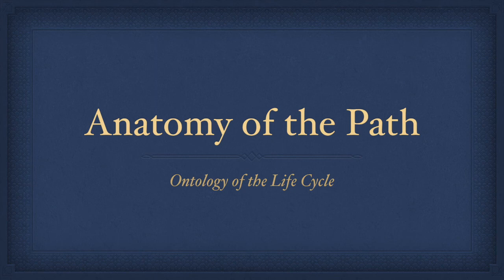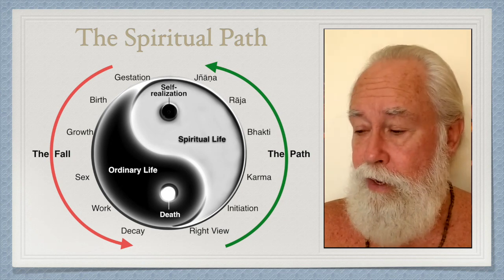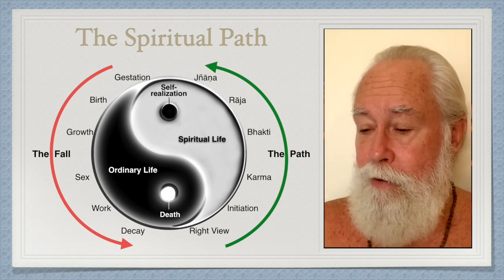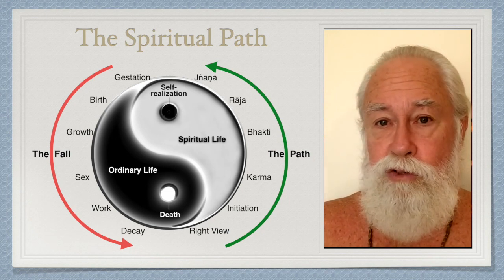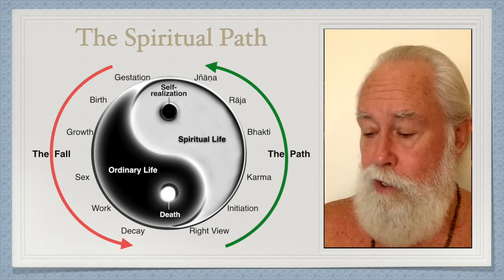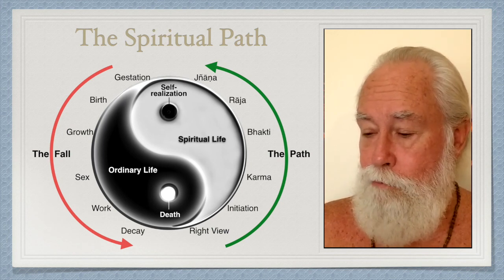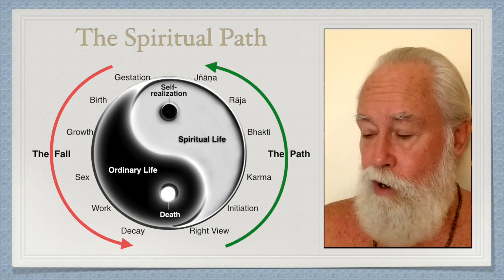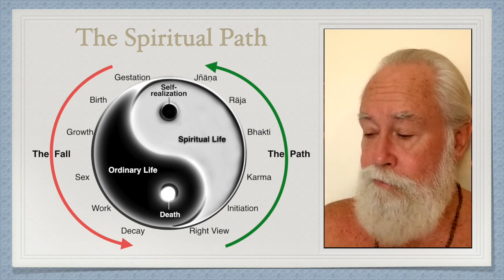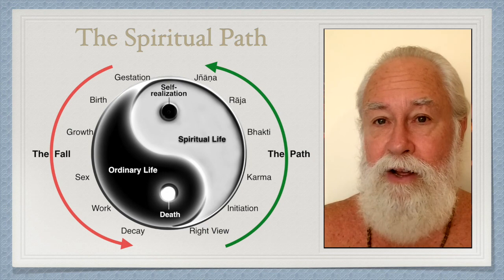In this episode we're going to discuss the anatomy of the path and the ontology of the life cycle. Looking again at the diagram of the Esoteric Teaching, this six-fold structure comes from the I Ching and is mirrored on both sides. The gestation stage resembles the instruction stage; birth is initiation; growth becomes karma yoga; sex becomes bhakti yoga; work becomes raja yoga; and what would normally be decay becomes jnana, or knowledge.